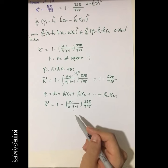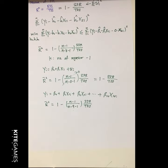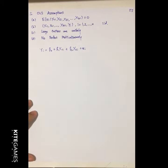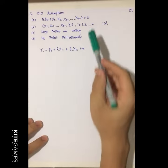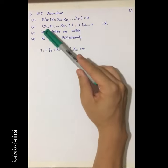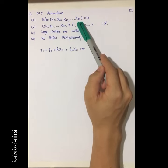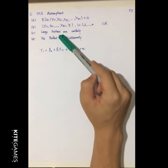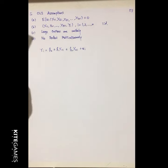So the adjusted R-square can better reflect whether the OLS estimator is a good fit. Now let's talk about the OLS assumptions under multiple regressions. The first three assumptions are more or less the same as in simple regression: the expected value of the error term given x is zero; all x and y are i.i.d.; and large outliers are unlikely.